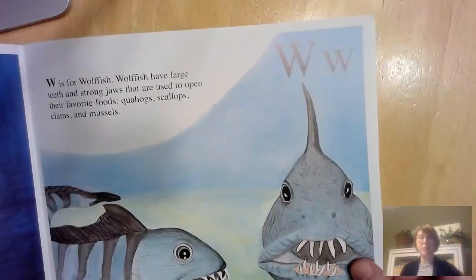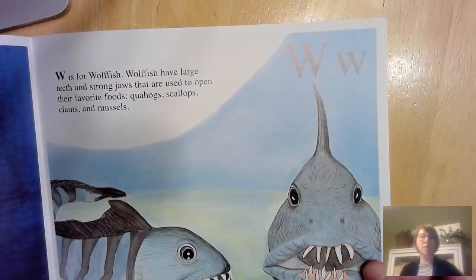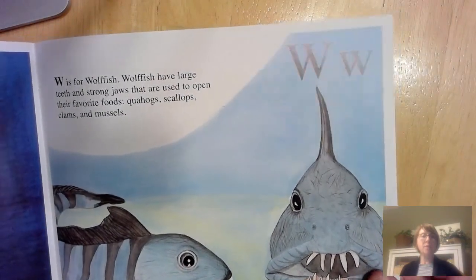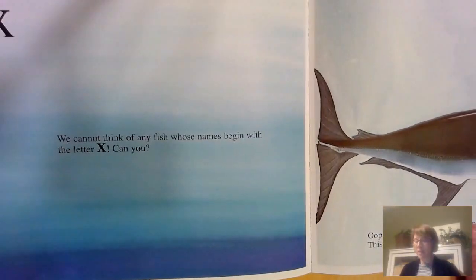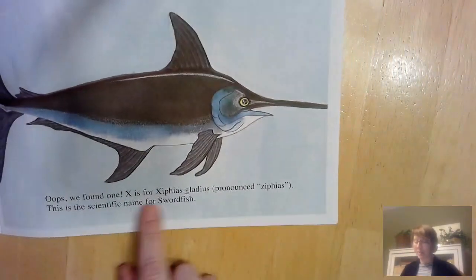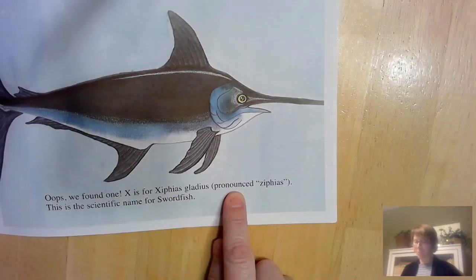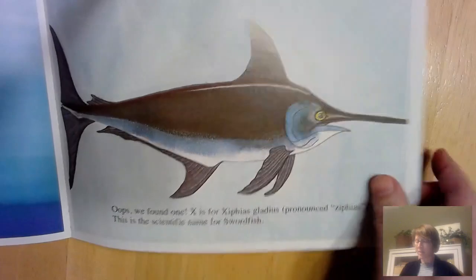W is for wolffish. Wolffish have large teeth and strong jaws that are used to open their favorite foods: quahogs, scallops, clams, and mussels. X — we cannot think of any fish whose name begins with the letter X. Can you? Oops, we found one. X is for xiphias gladius — that's the scientific name for swordfish.